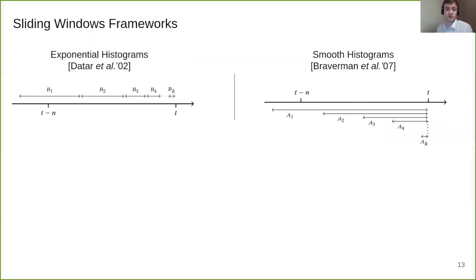To estimate the approximation on T minus N to T, one needs to combine all the buckets into one sketch at query time. Similarly, smooth histograms maintain K buckets which overlap and increase in size exponentially. Both frameworks have requirement on target function to keep number of buckets K sublinear.